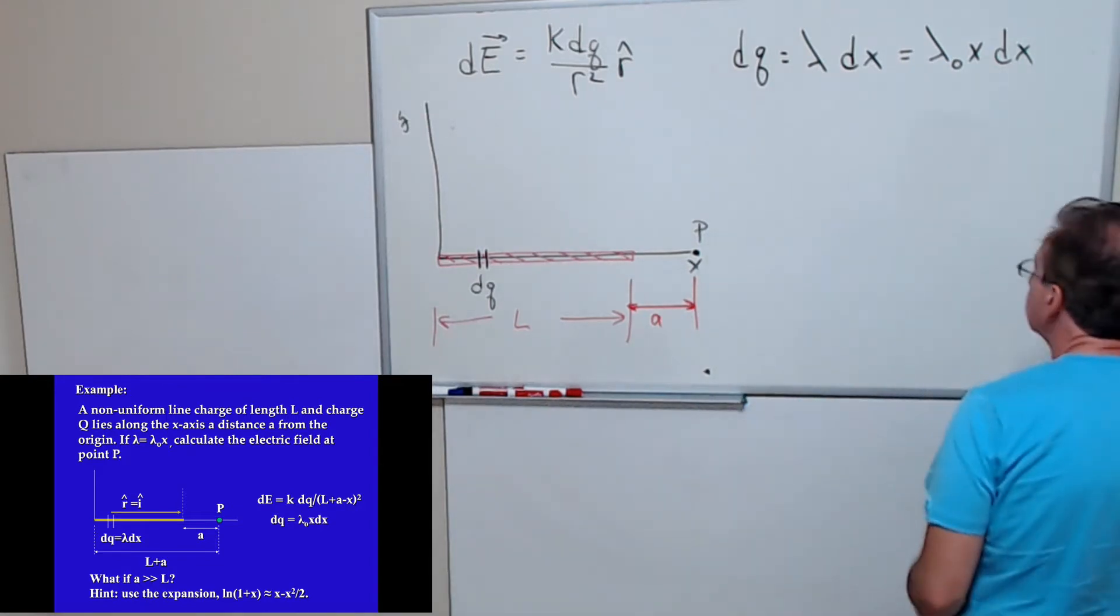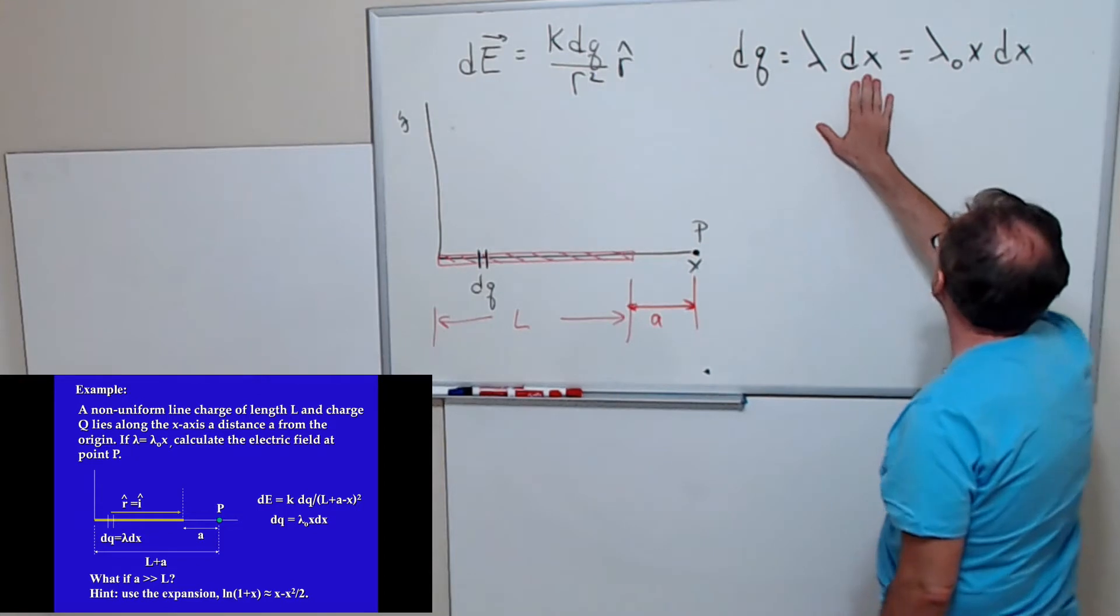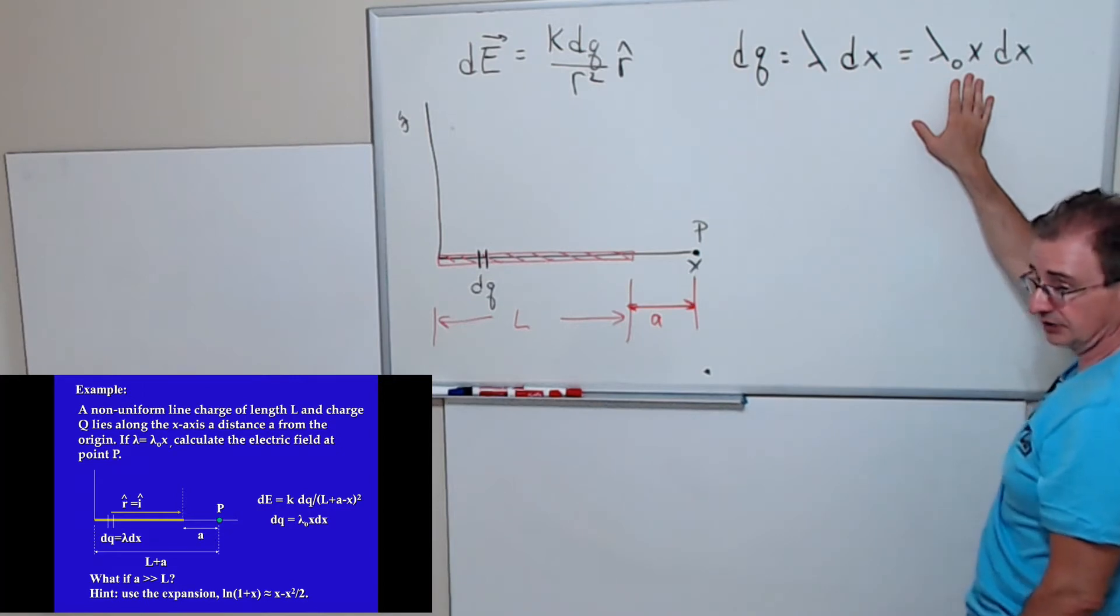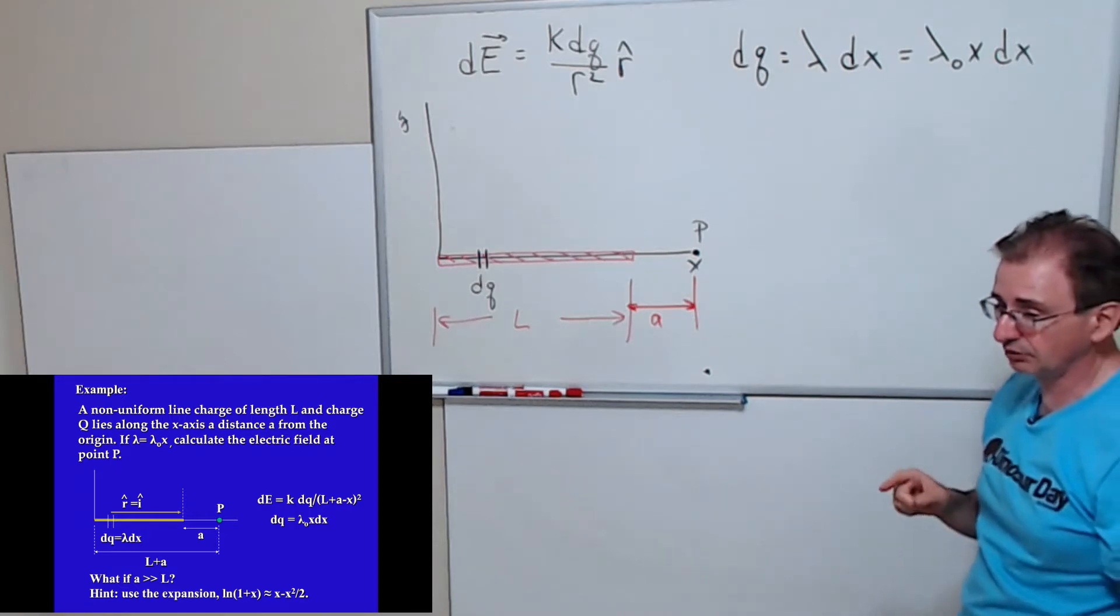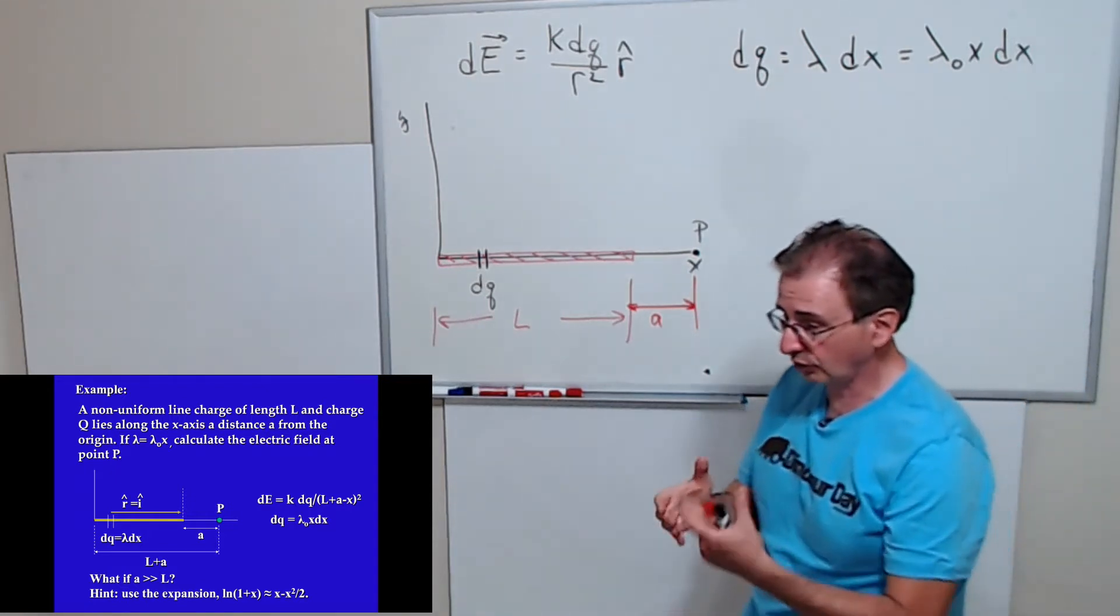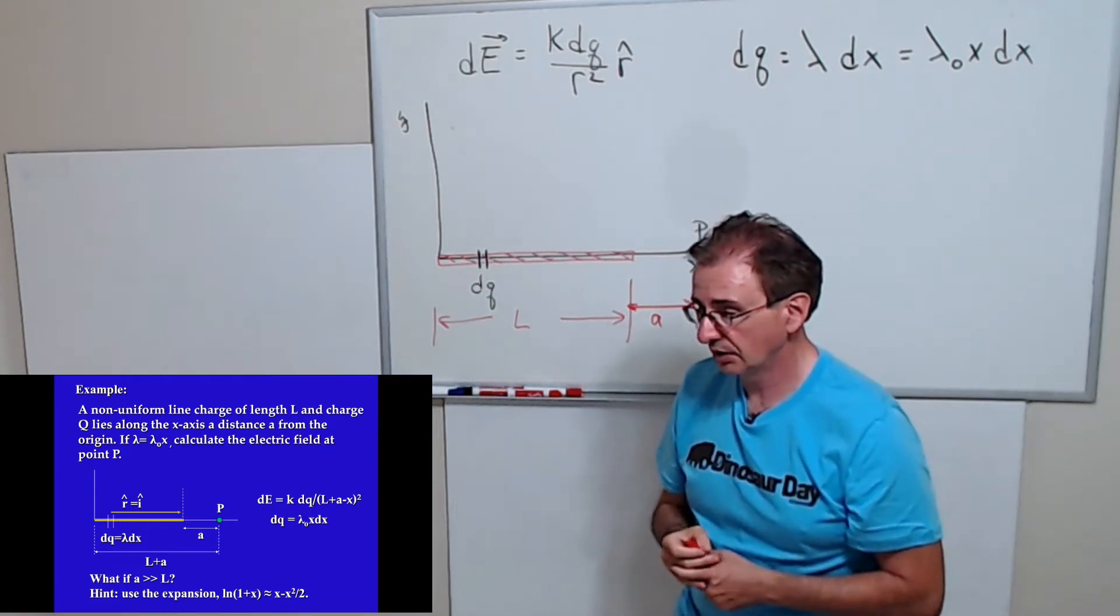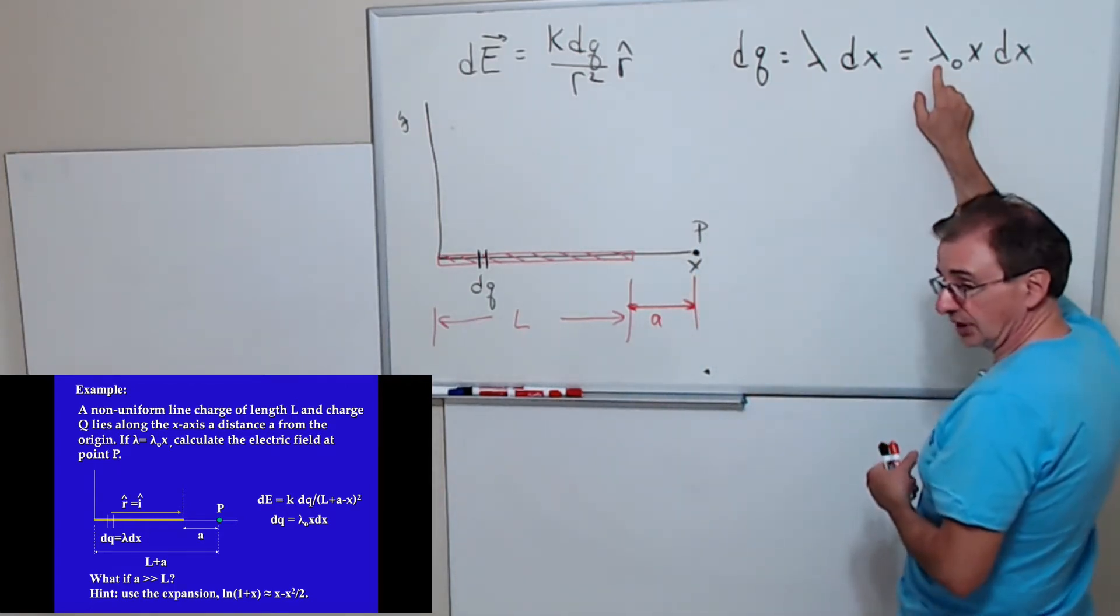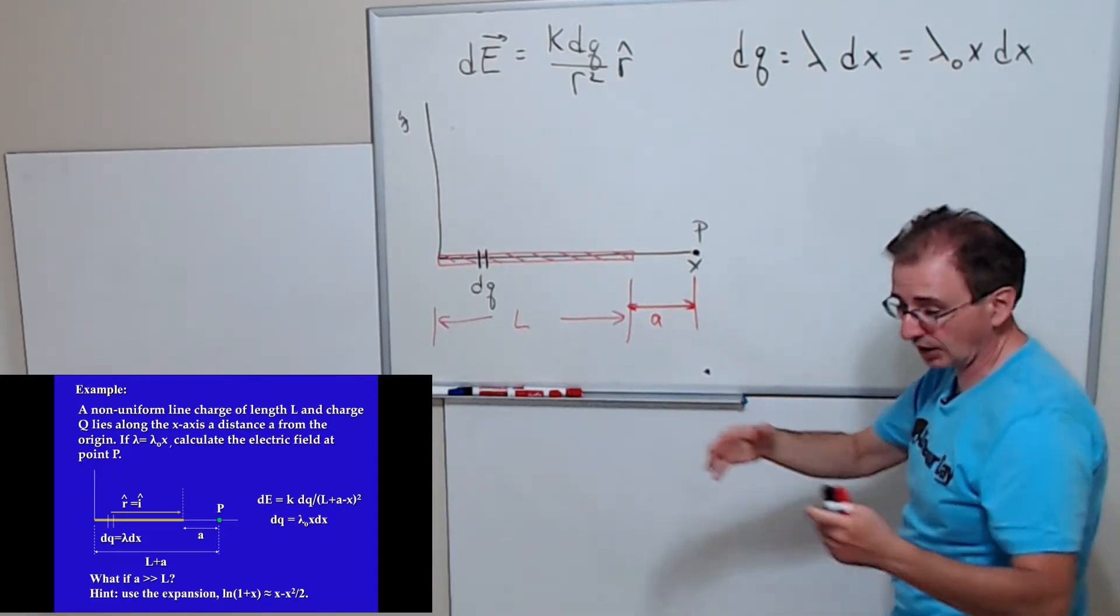Okay, let's look at dQ first. We know that dQ is lambda dx which equals, in this particular case, lambda naught x dx as is given in the problem. But if I know that the total charge is Q, in other words if I know the total charge is some number Q, whatever that number is, I can figure out this number because I can integrate my dQ over the entire rod.